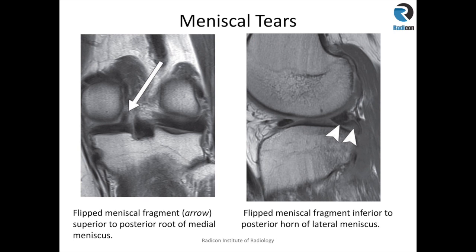In this second case, you can see a tongue-like structure protruding posterior and inferior to the posterior horn of the lateral meniscus, and there is a bit of volume loss and blunting of the posterior horn of the lateral meniscus. This indicates damage or a tear to the posterior horn of the lateral meniscus with the meniscus flap displaced posteriorly and inferiorly.